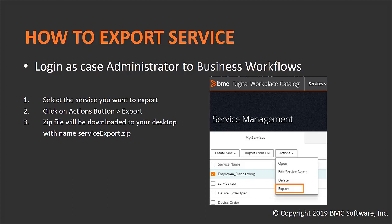Click on the Action button and you will see an Export option. Click on the Export button and a zip file will be downloaded to your desktop with the name service_export.zip. If you open that zip, it will contain a JSON file. This is the step to export one service or a group of services from BMC Helix Business Workflows.